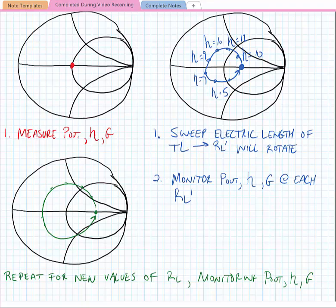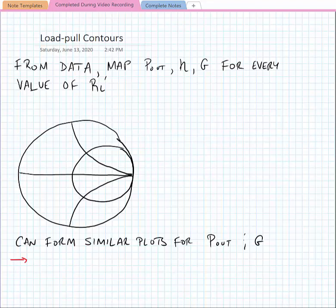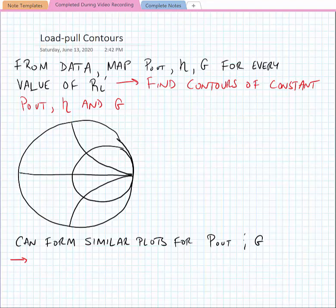Now from this data set, we would map the output power, efficiency, and gain for every value of R sub L prime, and we could find contours of constant output power, efficiency, and gain. So let's look at the concept for efficiency.